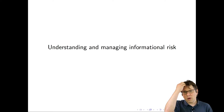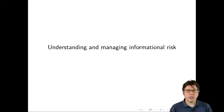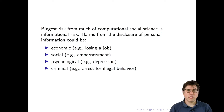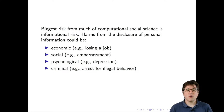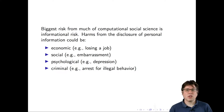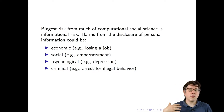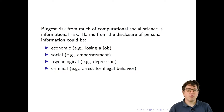The second of the four areas of difficulty is one I've seen many researchers struggle with: understanding and managing informational risk. Informational risk is the biggest risk that most computational social science research has — it's the risk that comes from information disclosure. That risk could be economic, such as losing a job; social, such as embarrassment; psychological, such as depression; or criminal, if information about people participating in illegal behaviors were to become available.